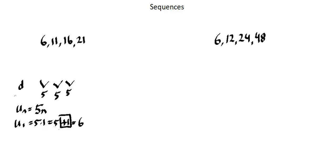Any of my terms need this adjustment of plus 1. So what this tells me is I can make an adjustment to my general rule. And my general rule is un equals 5n plus 1.